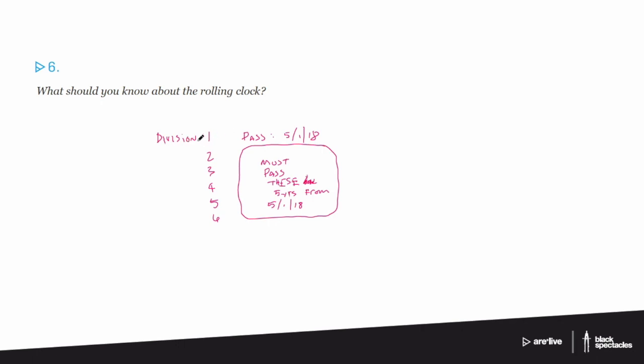So if you pass Division 1 on May 1st of 2018, you have to pass these guys here five years from that date. Is that right? Yep. So you have five years before that test expires. And then if it expires, so let's say you get some of these done, but not all of them done. Then what happens?